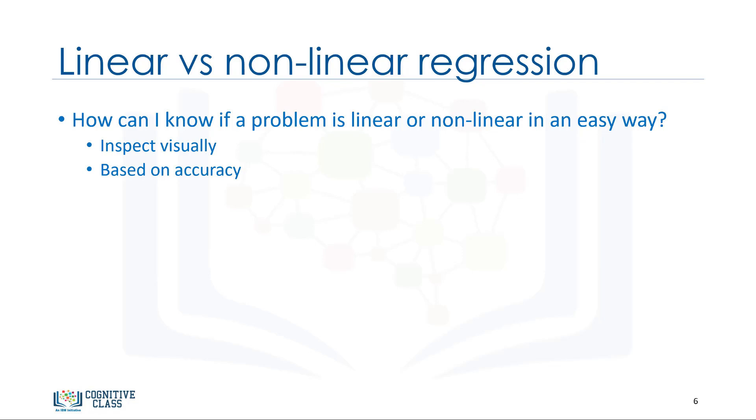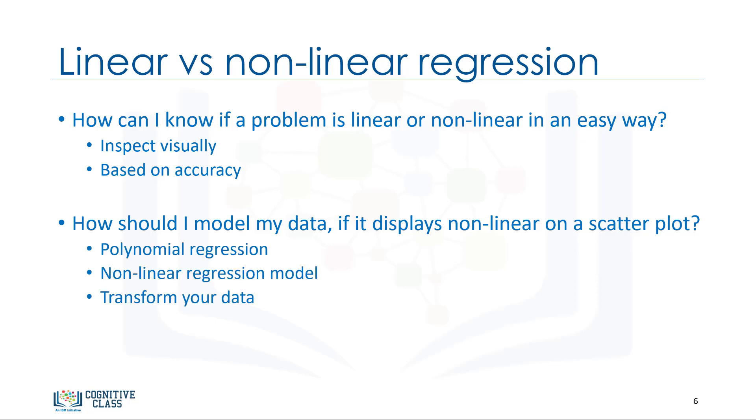The second thing we have to do is to use non-linear regression instead of linear regression, when we cannot accurately model the relationship with linear parameters. The second important question is, how should I model my data if it displays non-linear on a scatter plot? Well, to address this, you have to use either a polynomial regression, use a non-linear regression model, or transform your data, which is not in scope for this course.